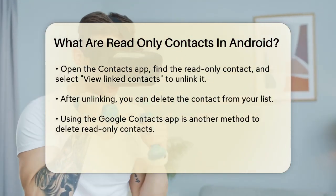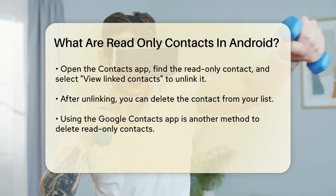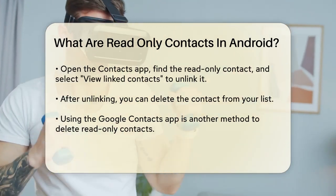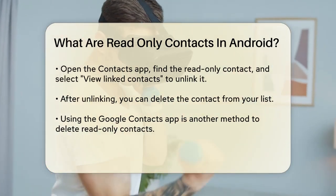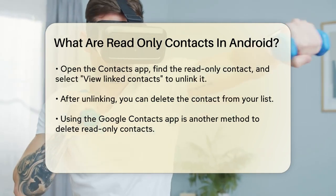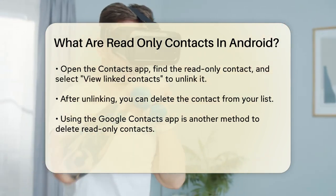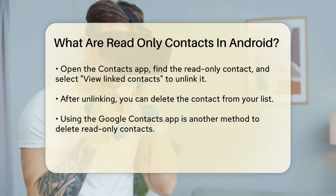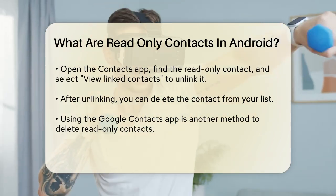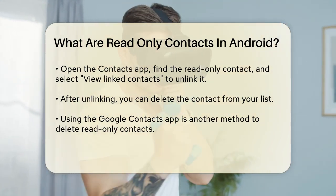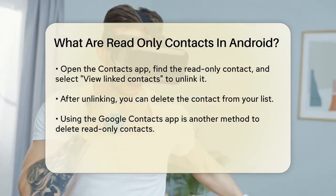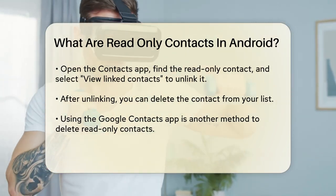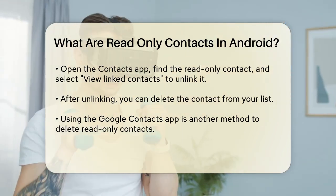So how do you remove these read-only contacts? You have a few options. First, you can try to unlink the contact from the third-party app. To do this, open your Contacts app, find the read-only contact, tap the three dots, the More option, select View Linked Contacts, and then tap Unlink. After unlinking, you can search for the contact again and delete it.